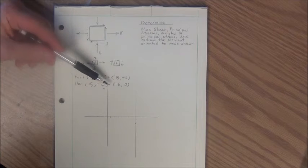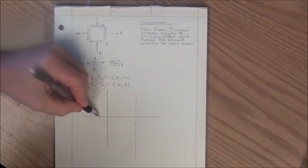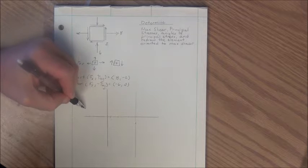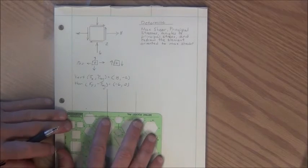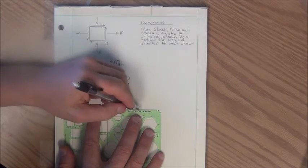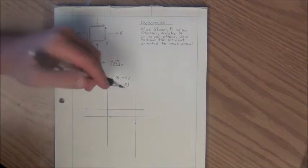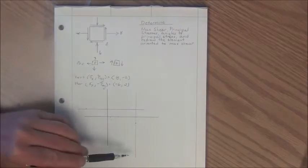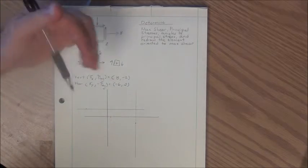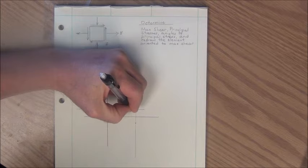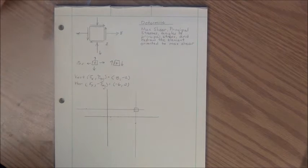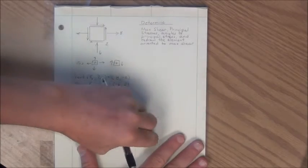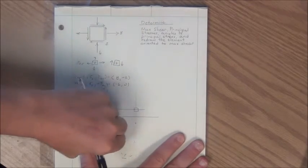My horizontal point is given by minus 6 and positive 2, so I plot that point and draw a horizontal line through it. In the pole method, the intersection of my horizontal line and my vertical line is called the origin of planes. This origin of planes represents the element in this exact stress state — that will make more sense in a few moments. I'll trim the lines to save room on the drawing.